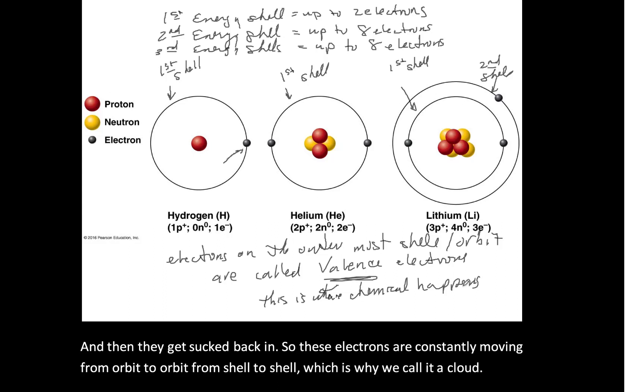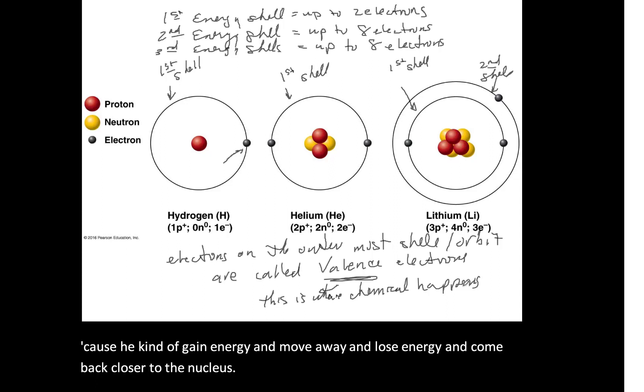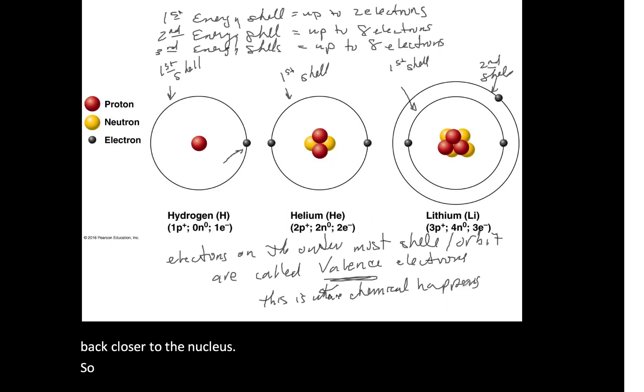What happens is these electrons closest to the nucleus get energized from the attraction, and as they get energized, they gain enough energy to move away from the nucleus — spreading out to other potential orbits. But as they move further away, they lose energy and get sucked back into the positive nucleus. Then they gain energy again when close to the nucleus, pull away, float out to the outer shells, lose energy again, and get sucked back in.